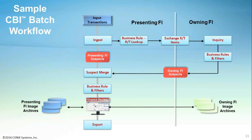This chart shows a sample batch workflow for cross-bank inquiry. The left-hand side depicts the standard dupe or fraud detective workflow presented earlier. The right-hand side shows how a presenting bank would inquire on a cooperative bank for any deposited items drawn on that bank. As the presenting bank ingests items into its detective database, it identifies any deposited items drawn on a cooperative bank and sends these items to the owning bank for early detection. The owning bank compares the items against its detective database to identify any suspects and applies its business rules and filters to automatically disposition items. The owning bank then returns the disposition code for each suspect back to the presenting bank.